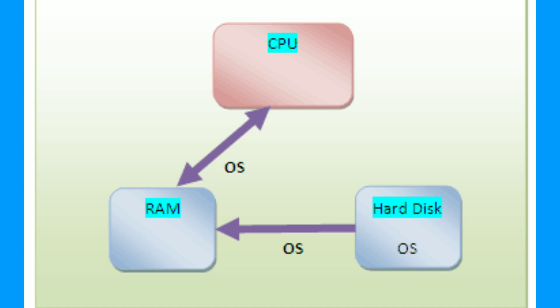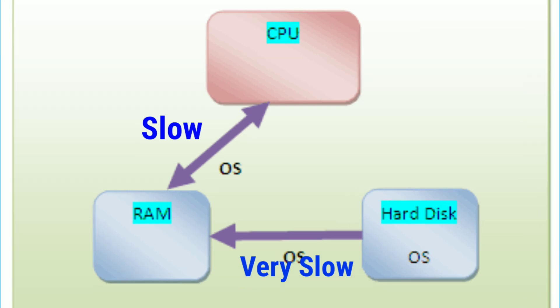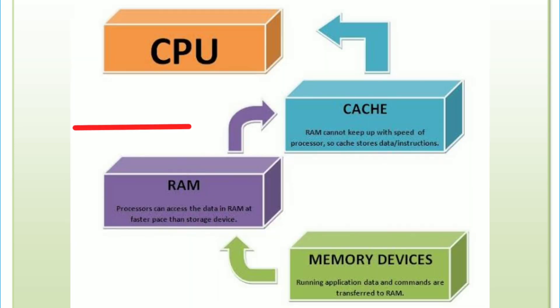But still, RAM is slower than the clock speed of the CPU. The CPU's clock speed is faster than RAM. So to bridge this gap, we will introduce cache memory. Cache memory allows the CPU clock speed to execute instructions faster.